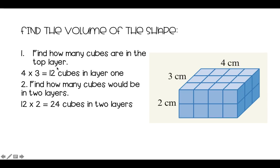And to do this, we go 12, which is how many are in the top layer, times 2, which gives us 24 cubes in two layers. So then what we say is therefore, which is what these three dots mean, therefore volume equals 24 centimetres cubed.